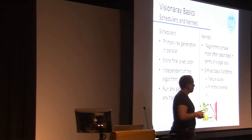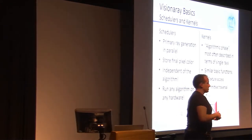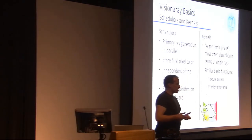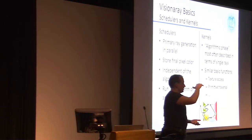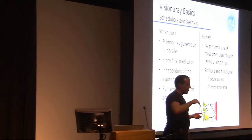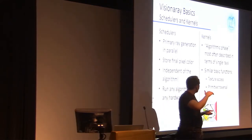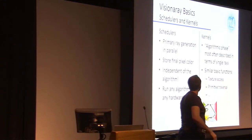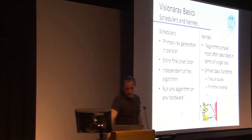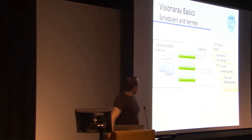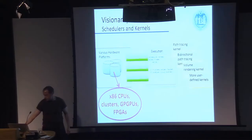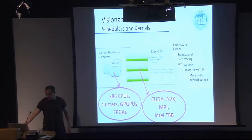On the other hand, we have kernels, which are meta-algorithms. Visionary implements a whole bunch of algorithms such as texture access, higher-order texture access, ray acceleration structure traversal, and ray-primitive intersection. The user constructs meta-algorithms — we call these kernels — and they are executed by the schedulers, which write the final result.